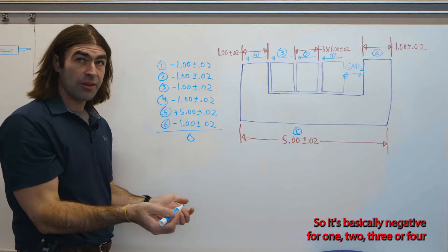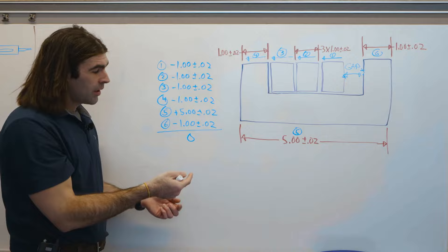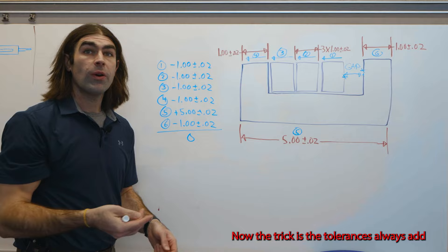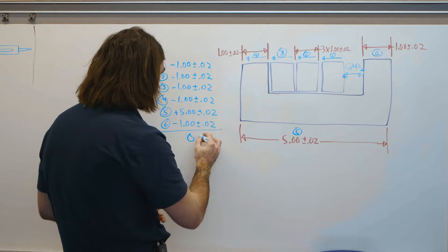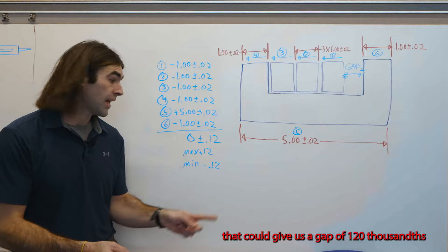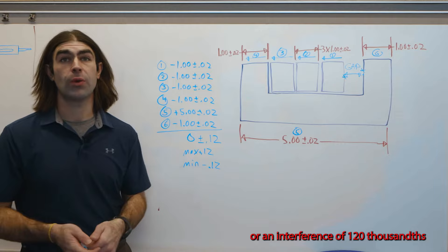So we've got all these negative numbers, four, so it's basically negative four, negative five, plus positive five is going to be zero. Now the trick is the tolerances always add. So 20, 40, 60, 80, 100, 120, so plus or minus 120 thousandths. That could give us a gap of 120 thousandths or an interference of 120 thousandths.